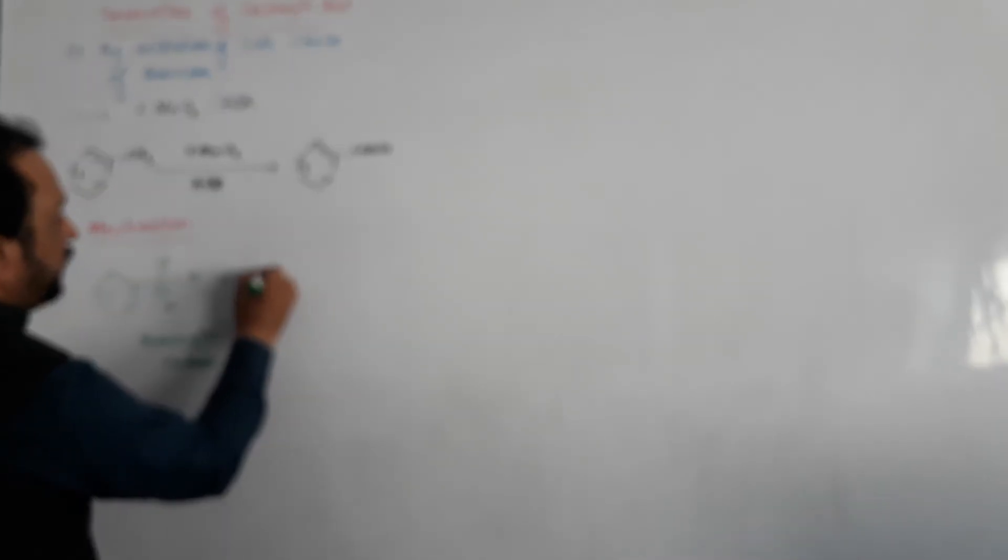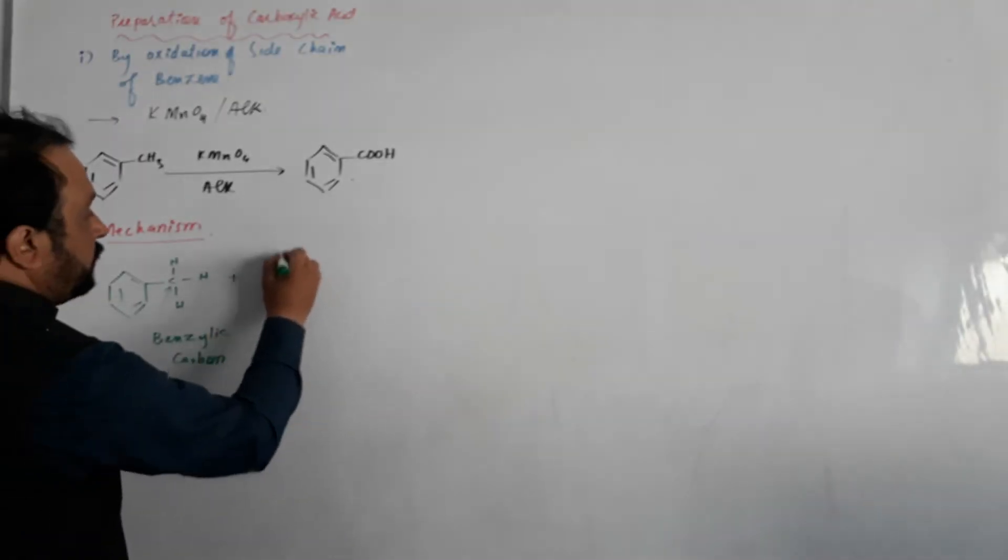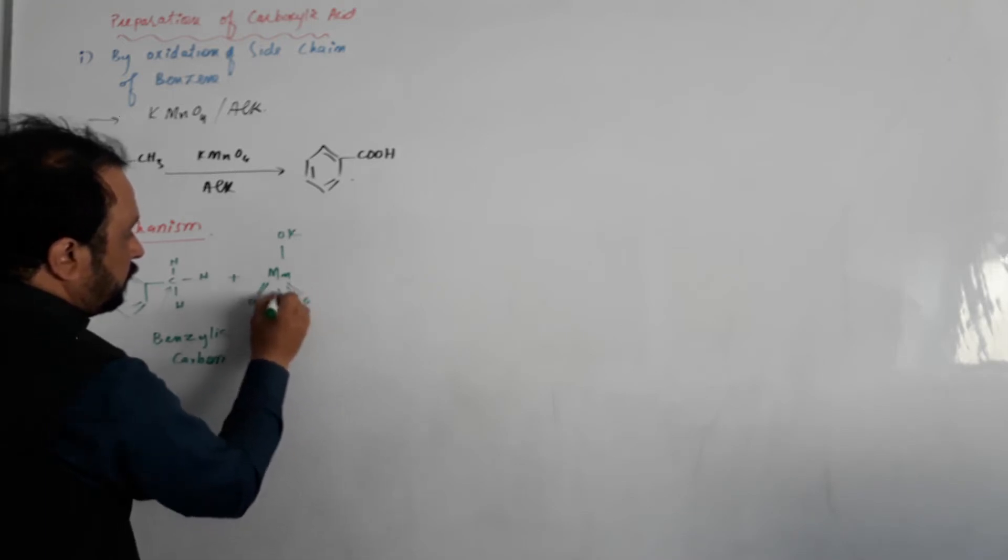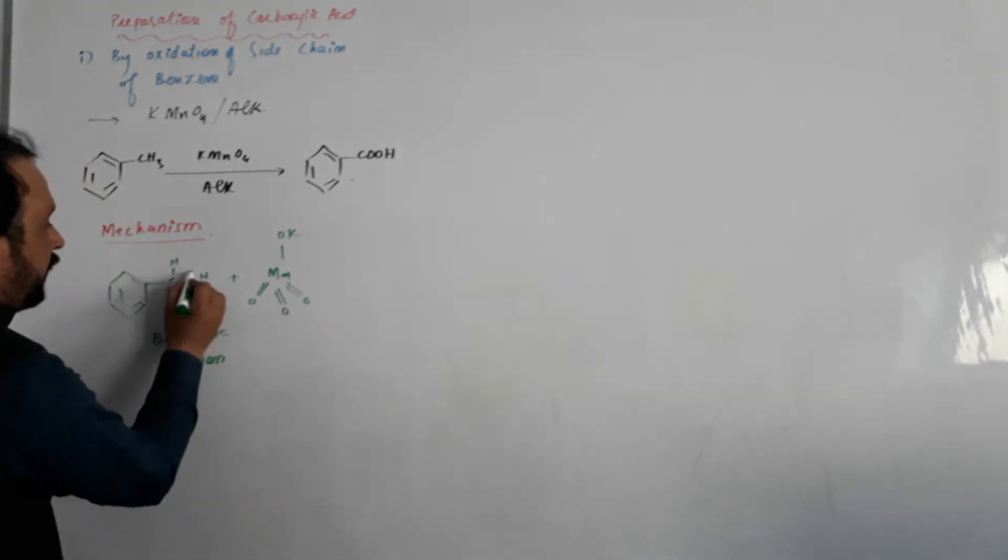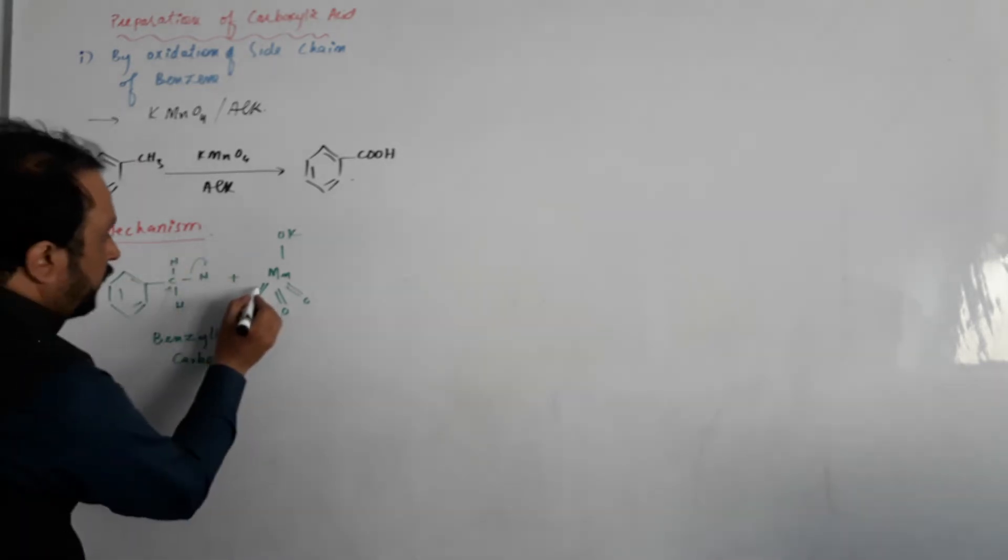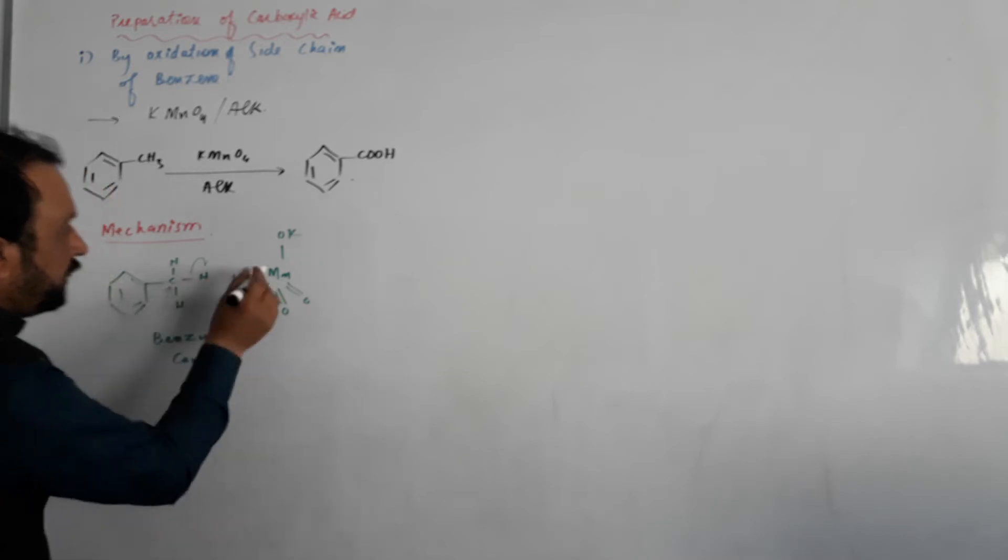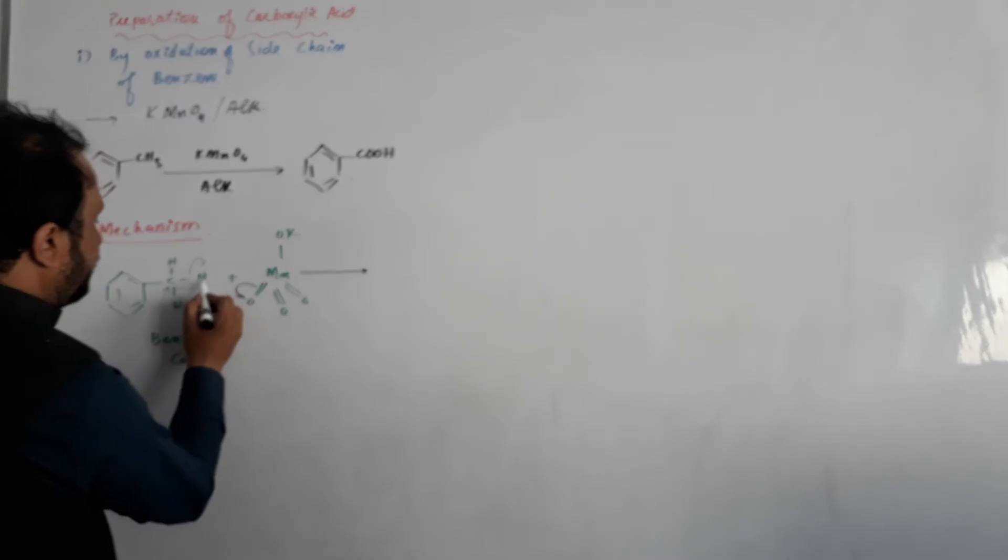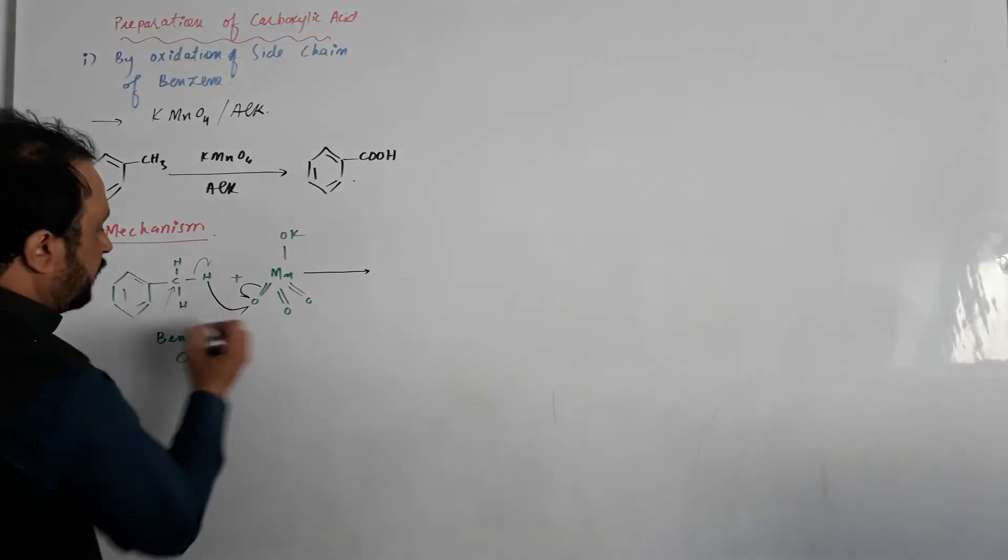We use potassium permanganate. The C-H bond is homolytically broken, and the oxygen-manganese bond is also homolytically broken. These electrons attack the oxygen.